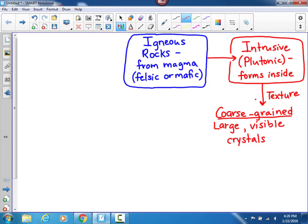This is because if the rock cools inside the earth or under the surface, it takes a long time to cool. And as it takes a long time to cool, the crystals have time to grow bigger. So intrusive rocks have coarse-grained texture, which means you can easily see the crystals.